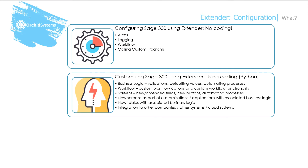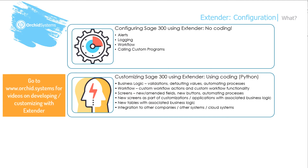You can also customize using Sage 300 and Extender, and this is using coding or Python. You can customize the business logic, workflows, and screens. You can create new screens and new tables and integrate directly to other systems. But this is covered off in another video — please go to our website to view that video.